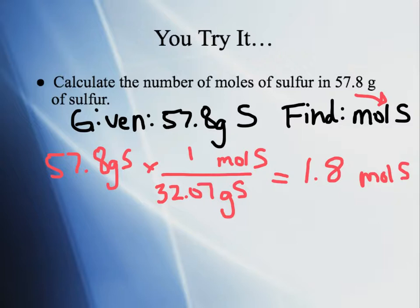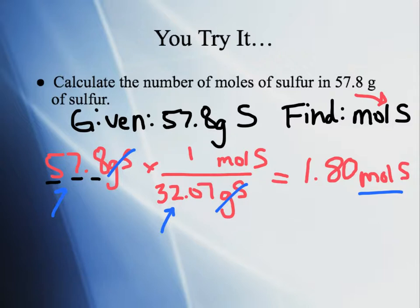Let's check: our units cancel and we have moles of sulfur. For sig figs, we start with 3 sig figs, and the calculator gives 1.8023, so we round to 1.80 — three sig figs, good. Does this make sense? We're dividing 57.8 by a smaller number, 32.07, so we expect a number greater than 1 — and it is. Everything pans out.